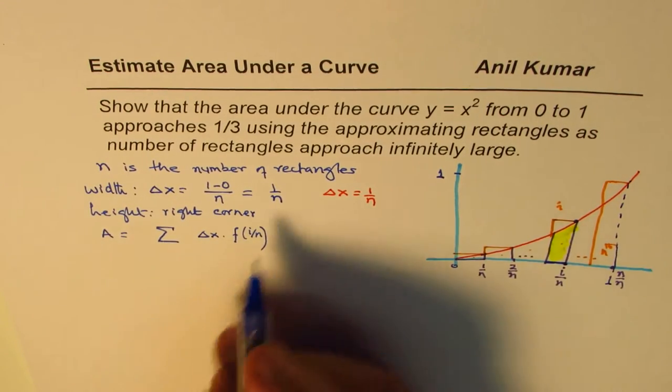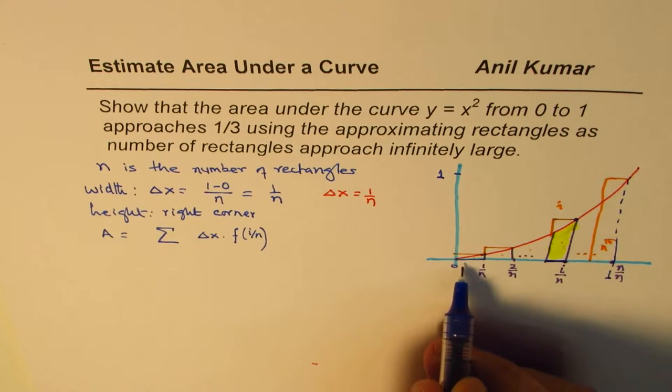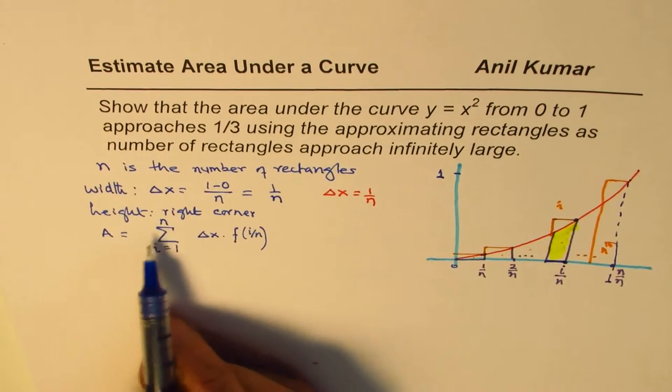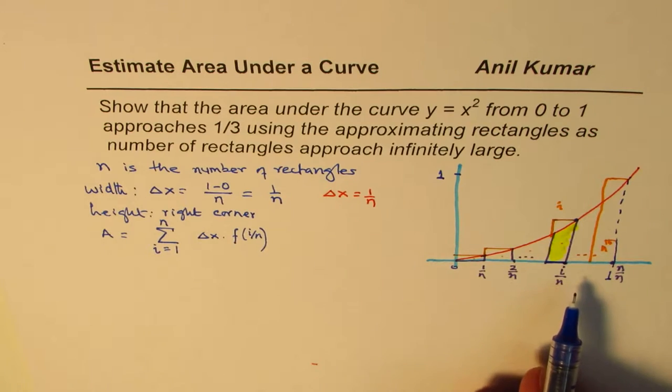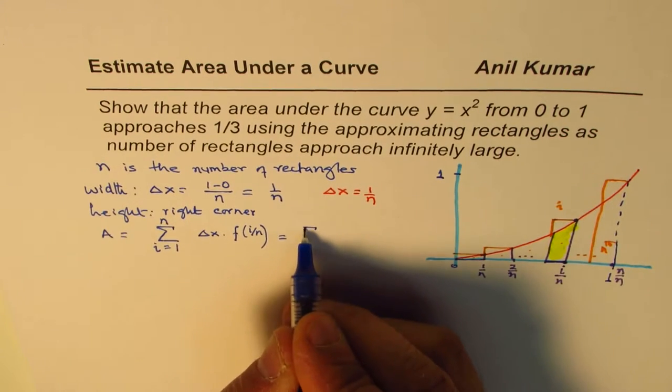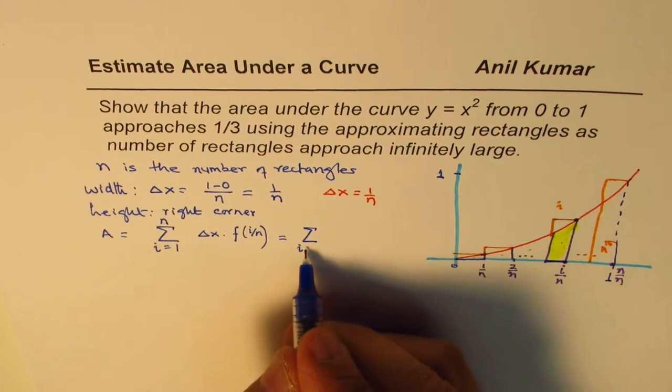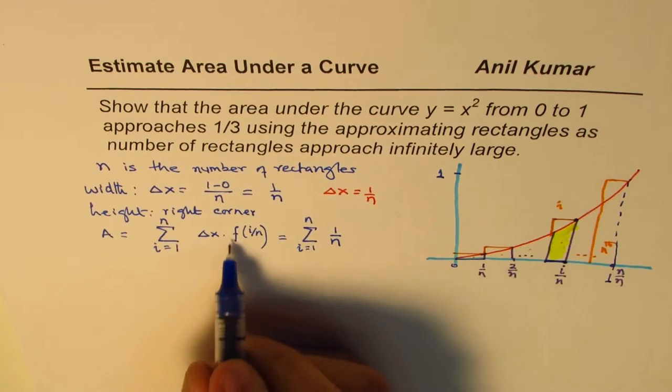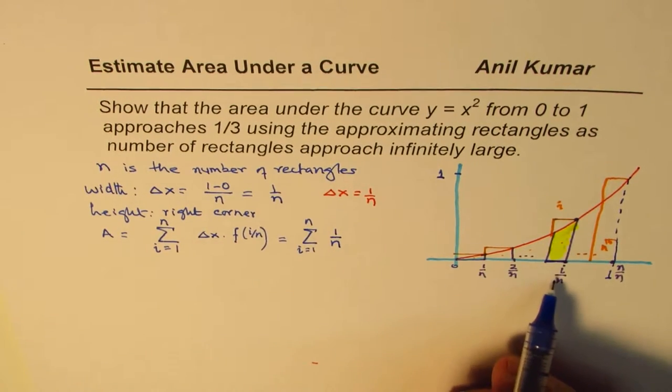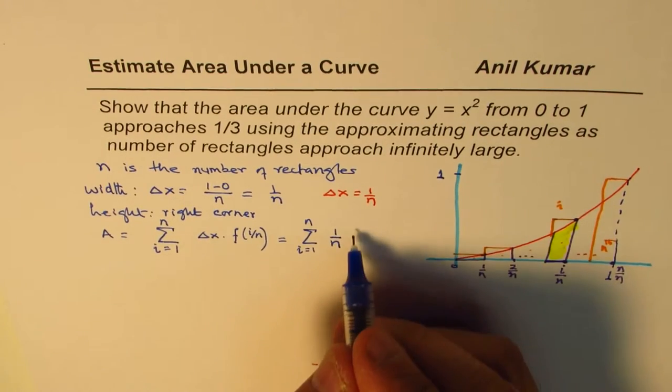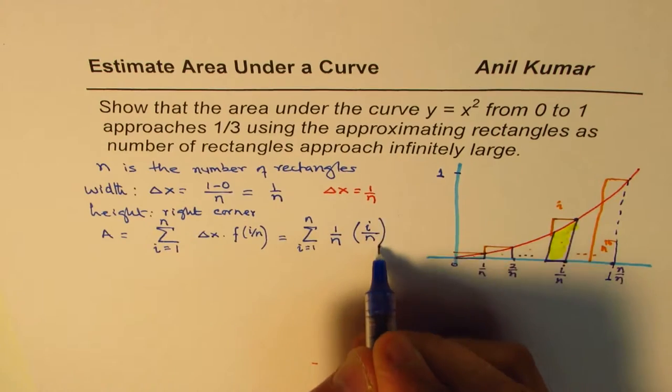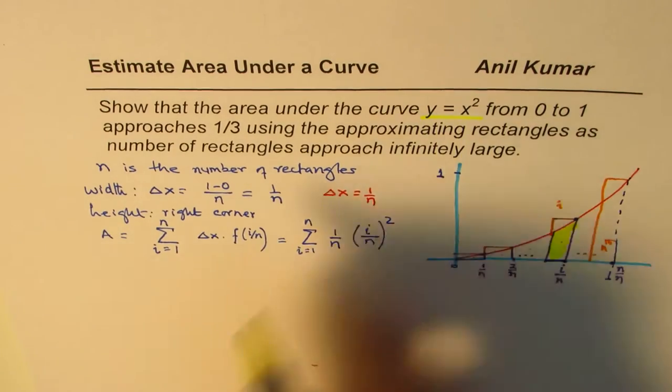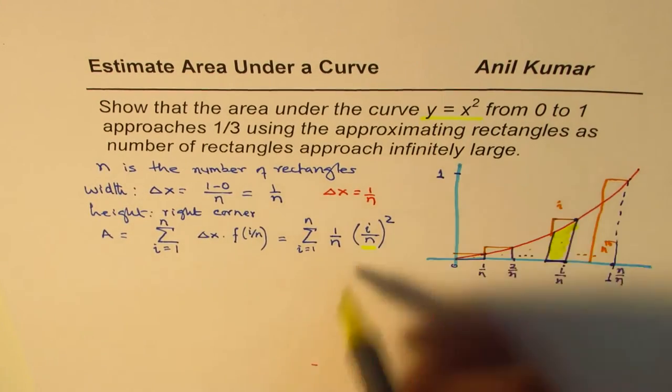So we can write this as, and remember these rectangles, how many we have, from 1 to n. So I'll write i varies from 1 to n. So that is the summation, short way of writing the same thing. And that could be now written as sum of n rectangles, i equals 1 to n. Delta x is 1 over n, so I'm writing 1 over n here. What is the value of function at i over n? We'll replace x with i over n. So that gives us i over n whole square, since the function is y equals x squared. So this is the function. So we replace it with that value.